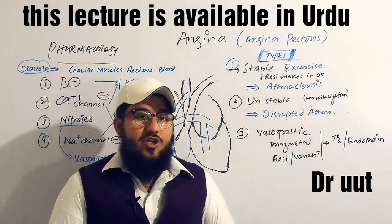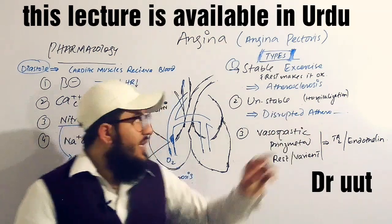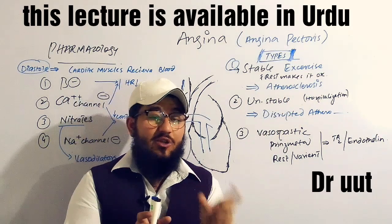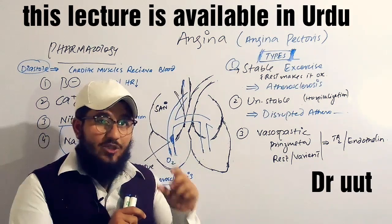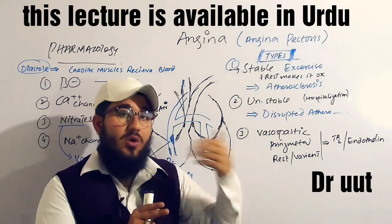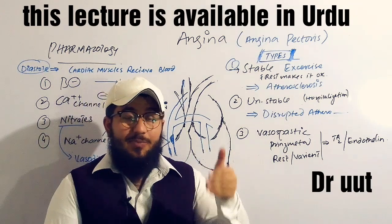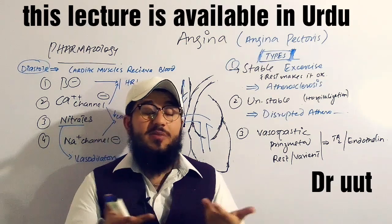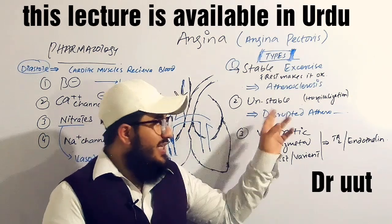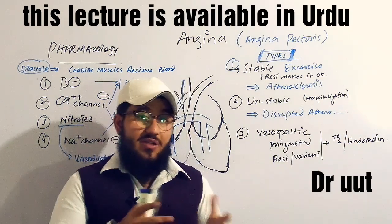Unstable angina is different from stable angina in that it involves disruption of the atherosclerotic plaque. In stable angina, there is only atherosclerosis, but in unstable angina, the atherosclerotic plaque may break, dislodge, and move to other coronary arteries, blocking them. This further decreases oxygen supply to the heart, causing pain. This type of angina requires hospitalization because it is a severe and serious condition.